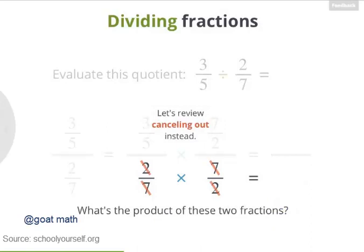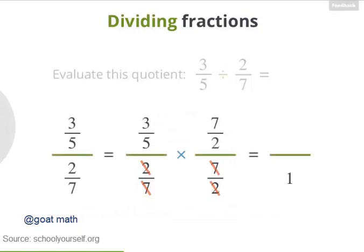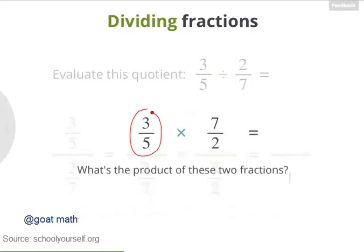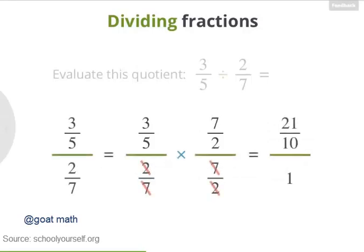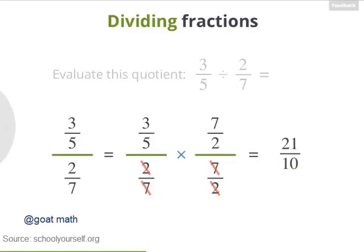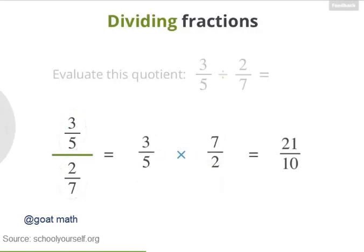Right, everything cancels out. So 2 sevenths times 7 halves is 1. Next, let's take a look at those numerators. What's the product of 3 fifths and 7 halves? Excellent! 3 fifths times 7 halves is 21 tenths. Now notice that our final answer is 21 tenths divided by 1. Dividing a number by 1 doesn't change the number, so this is 21 tenths. And so, 3 fifths divided by 2 sevenths equals 3 fifths times 7 halves.